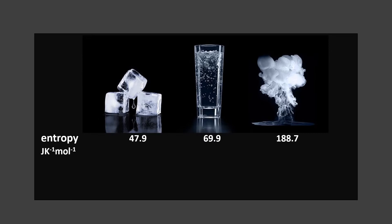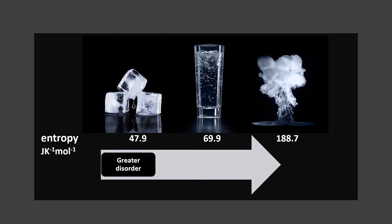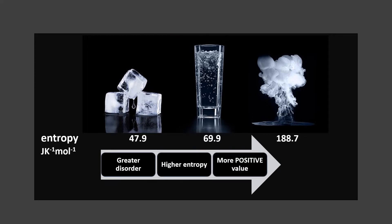Do you remember this slide from the previous lesson? It shows water in three different states, and we saw that entropy increases when there is a change of state. In other words, entropy values depend on temperature and physical state. You can see very clearly on this slide — the values are very different for each physical state of water. Notice how it is changing: with more disorder, the value is increasing.